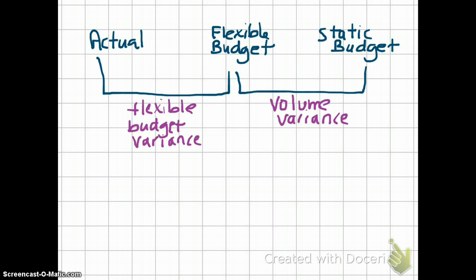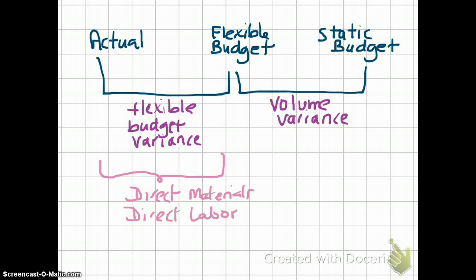What we're going to do next is split the flexible budget variance into further variances. We will be doing this for direct materials, direct labor, and variable manufacturing overhead. Keep in mind we only do this for direct materials, direct labor, and variable manufacturing overhead. We do not split the flexible budget variance for fixed manufacturing overhead.